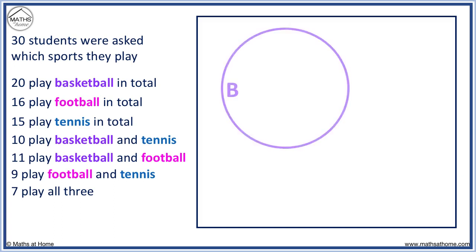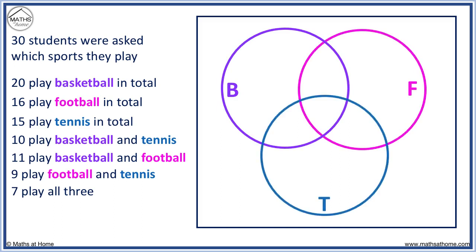We draw circles to show the three sports: basketball, football, and tennis. To complete a Venn Diagram, fill out the overlap of all three circles first.